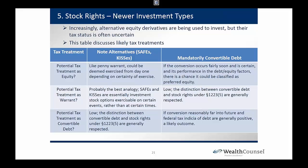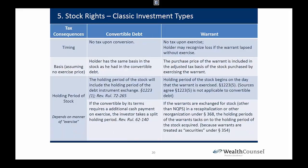Some tax issues around new investment types: we talked about SAFEs and convertible notes. Typically, when a convertible note converts into stock, we get tacking of holding period — so if we convert the note and immediately sell the stock issued on conversion, we have good authority that we can get tacking of the holding period and possibly long-term capital gain on that transaction. Warrants are not so clear. Typically the holding period of stock issued on exercise of a warrant starts on the date of exercise. The typical scenario is that warrants are rarely exercised — they just sit out there until the company gets sold and then they get cashed out.